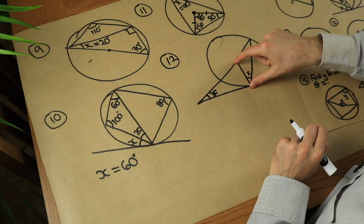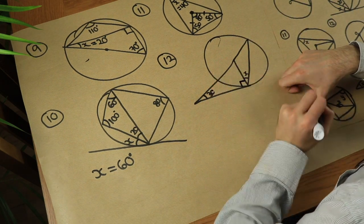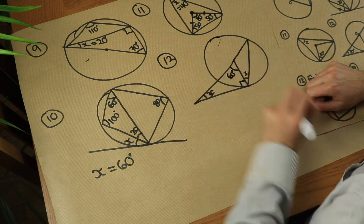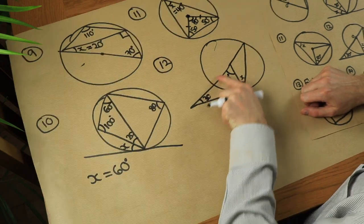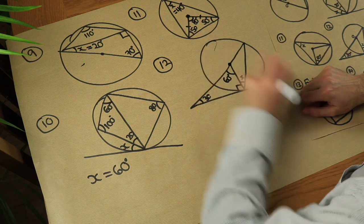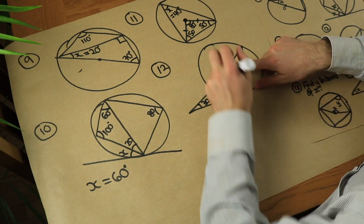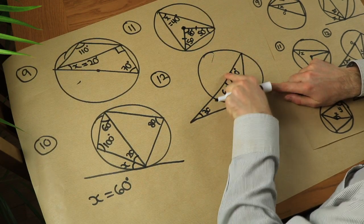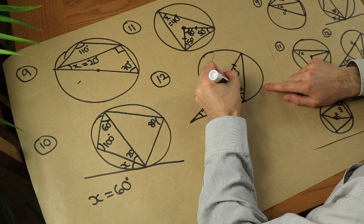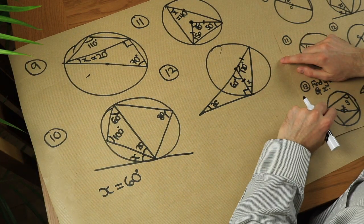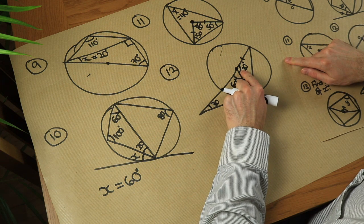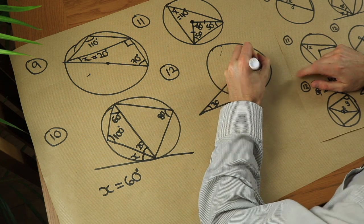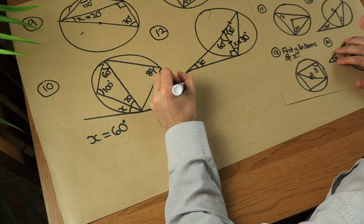For question twelve, a radius meets a tangent at 90 degrees. That means the remaining angle in this triangle is 60 degrees so the three angles add to 180. This is a straight line so angles on a straight line add to 180, making the adjacent angle 120 degrees. We also have two radii of equal length forming an isosceles triangle: the apex is 120, so the other two angles add to 60, giving x equals 30 degrees.